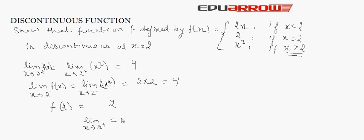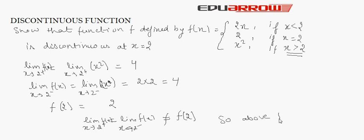The right-hand limit equals the left-hand limit in the given function, but they are not equal to f(2). So our function is discontinuous at x equals 2.